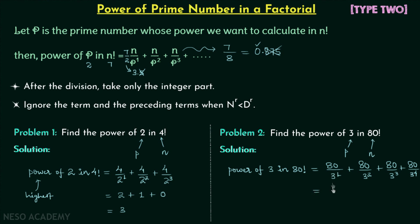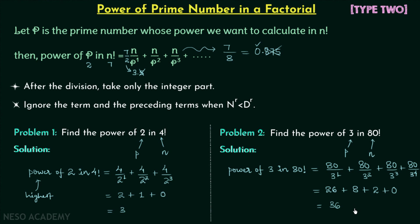Performing the calculation: 80÷3 gives 26.67, keeping the integer part we have 26. Plus 80÷9 gives 8.89, keeping the integer part we have 8. Plus 80÷27 gives 2.96, keeping the integer part we have 2. And 80÷81 gives an integer part of 0. Adding these up, the final answer is 36. So the highest power of prime number 3 in 80 factorial is equal to 36.